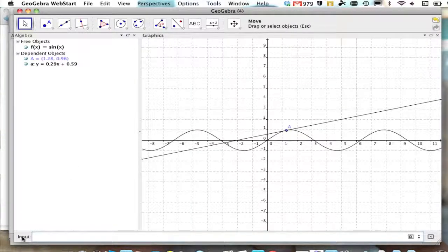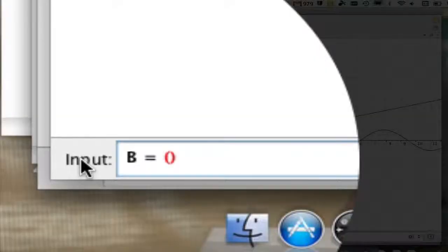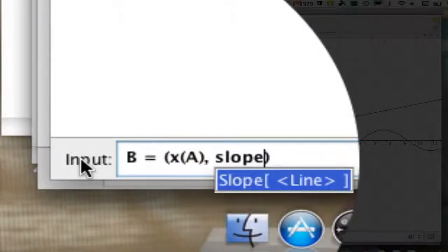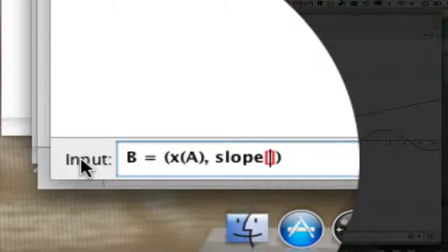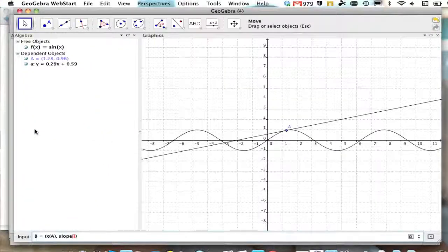Next thing we're going to do is create a fancy point B, and its coordinates are going to be this: the x-coordinate of A, and then the slope of the tangent line. I noticed that my GeoGebra file is named A, so I'm going to use a little A for the line, and I press enter.